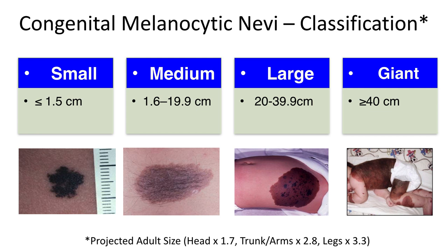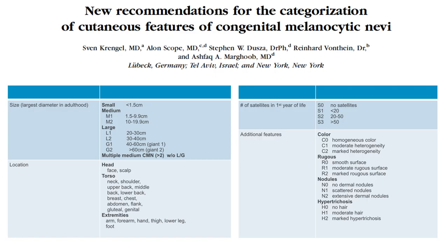The most important classification determinant of congenital nevi is the projected absolute size — the longest diameter. For the purposes of this talk, we'll focus primarily on small congenital nevi, which are considered less than or equal to 1.5 centimeters.